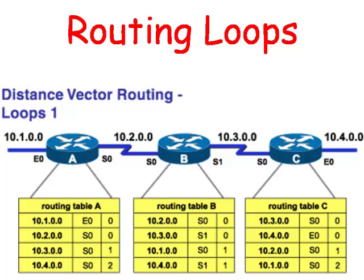In Router C's routing table, it shows that it is only zero hops away, meaning it is directly connected. In Router B's routing table, it says that it is only one hop away from the 10.4 network. And in Router A's routing table, it says that it is only two hops away from the 10.4 network.